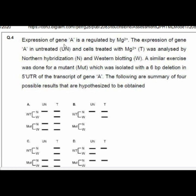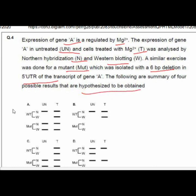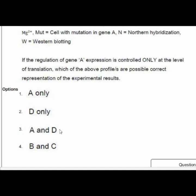Question 4 involves gene A regulated by Mg2+. Expression in untreated and Mg2+-treated cells was analyzed by Northern hybridization and Western blotting. A mutant with a 6 base pair deletion in the 5' UTR of gene A transcripts was also analyzed. From the four hypothesized results, option three — A and D — is the correct answer.